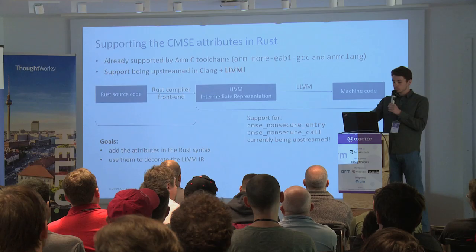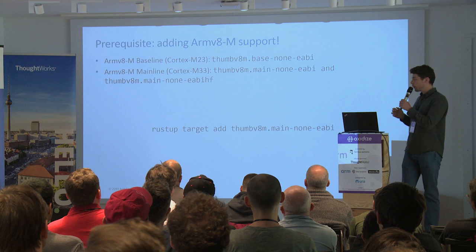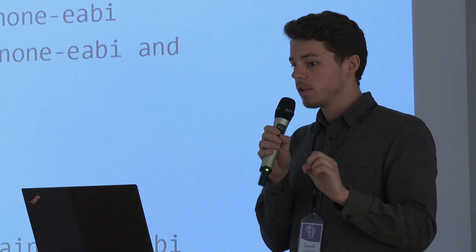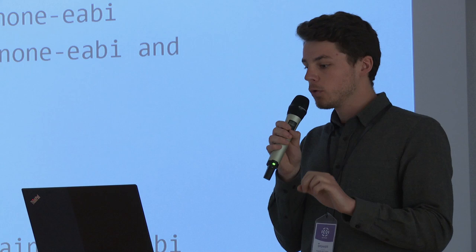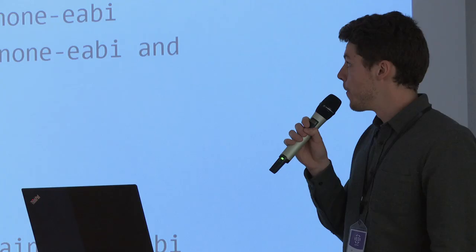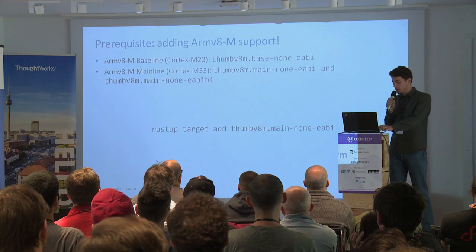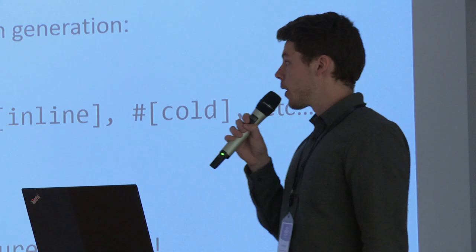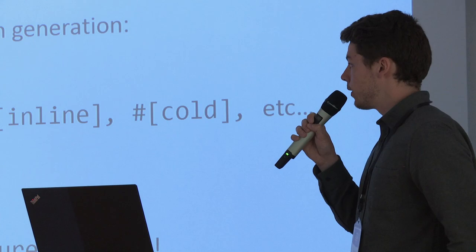Because these attributes are for the TrustZone security extension for ARMv8M — currently on Cortex-M23 and Cortex-M33 — it was necessary to add support for the ARMv8M architecture in Rust. That's what I did over the past few months. Now if you add those targets via rustup, it will just work on the latest nightly.